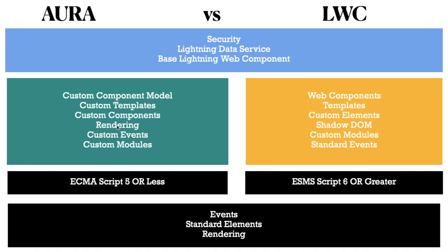For rendering in Aura, we also have to develop rendering optimization ourselves for large-scale applications. We also have custom events and custom modules. But for Lightning Web Components, most things are already available through web standards. For example, templates are provided by web standards, and custom elements are elements we can create ourselves and use across all projects.